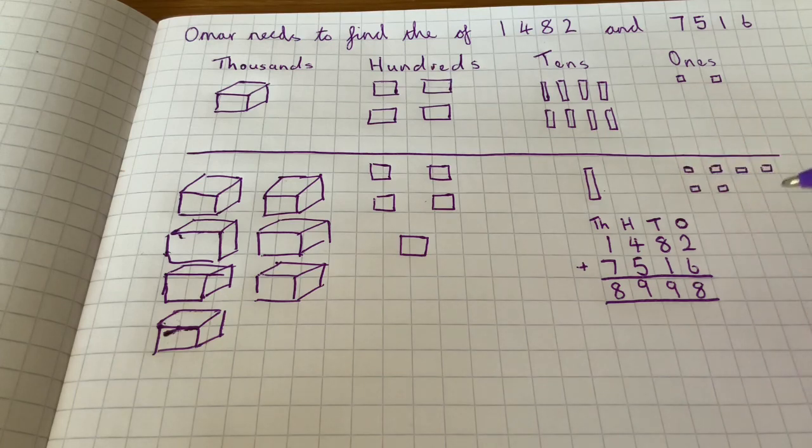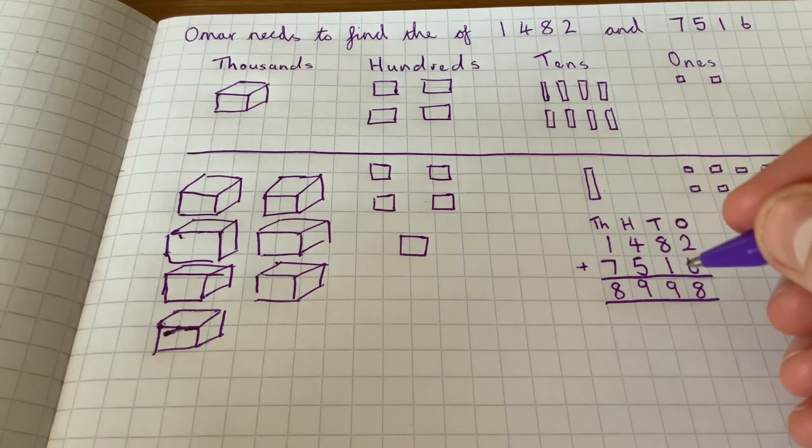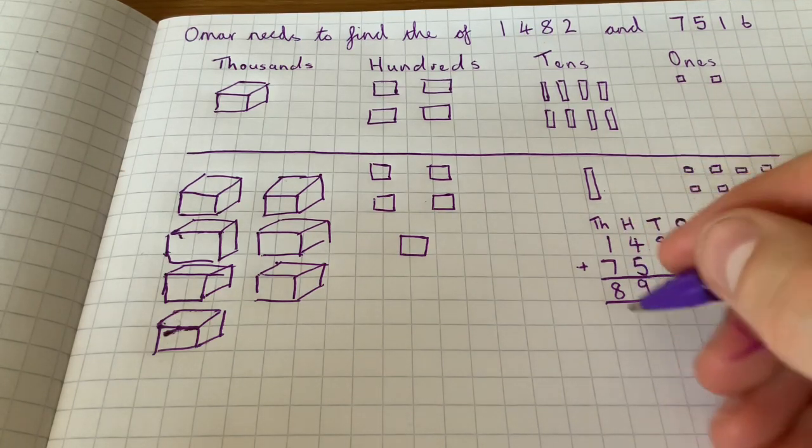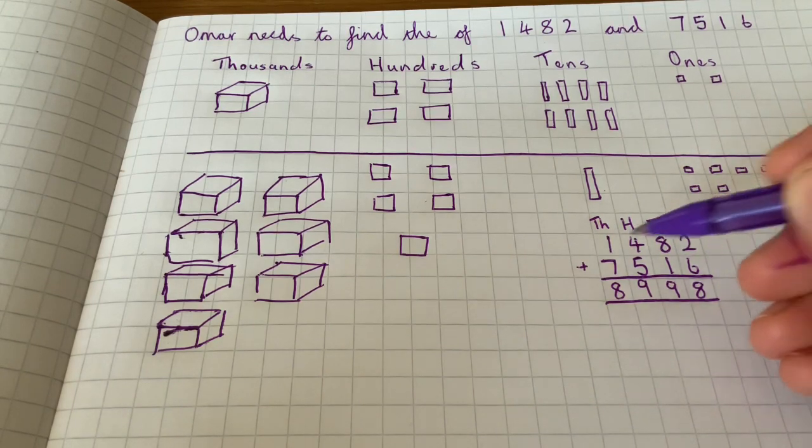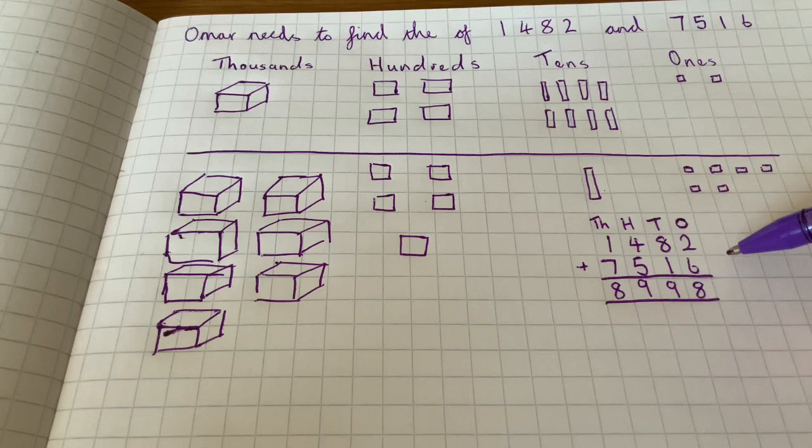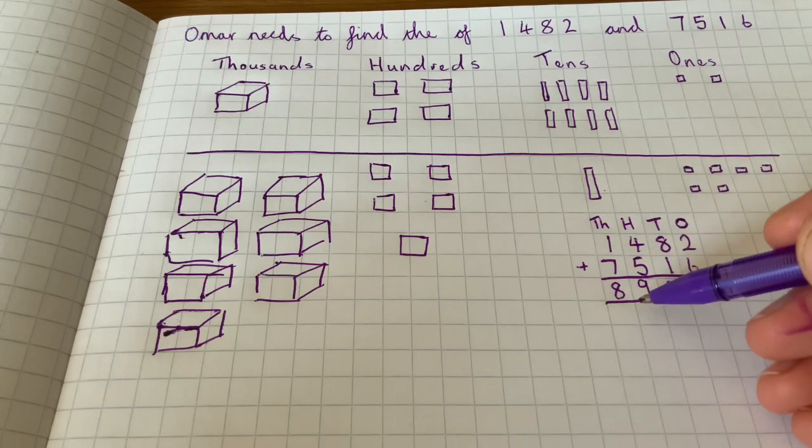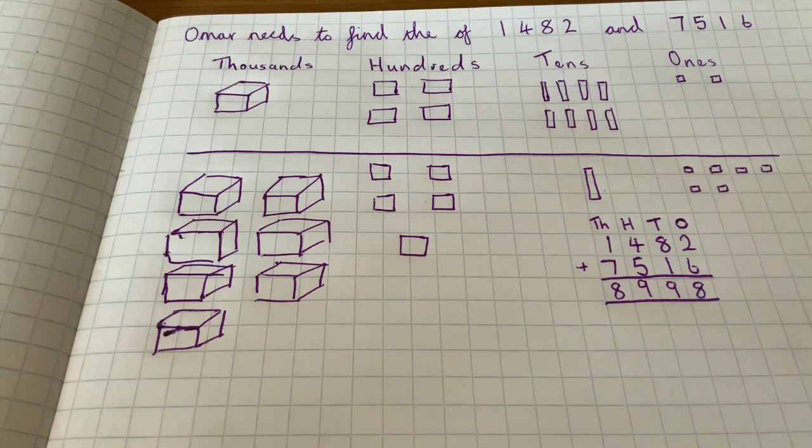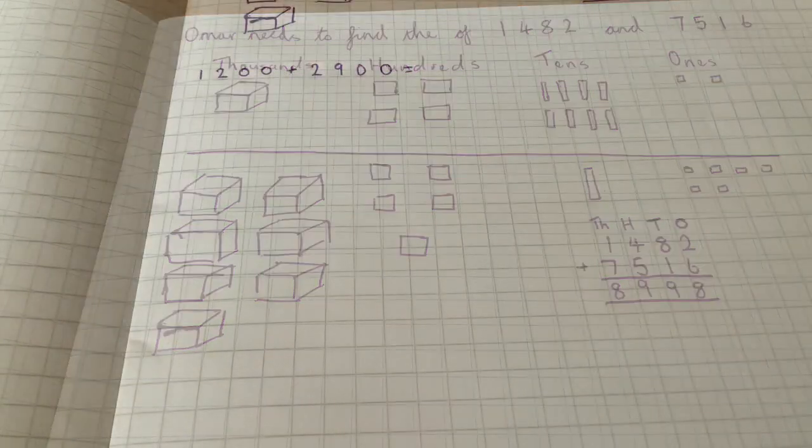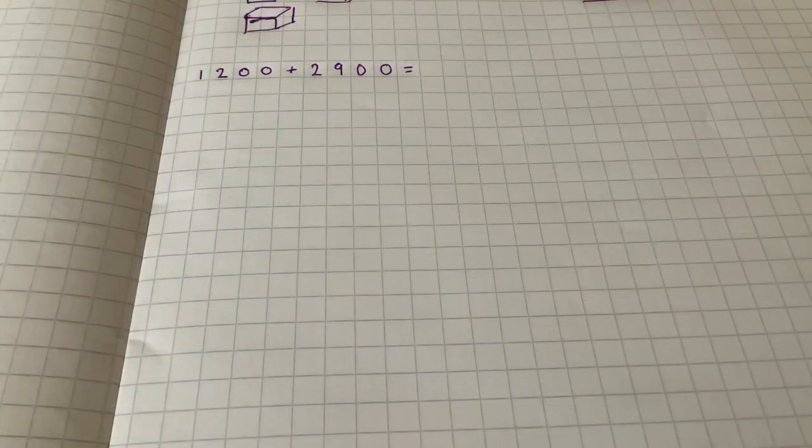And so when we've done that we can say the total of one thousand four hundred and eighty-two add seven thousand five hundred and sixteen is eight thousand nine hundred and ninety-eight. So that's our method there. So we'll now move on to our next question.